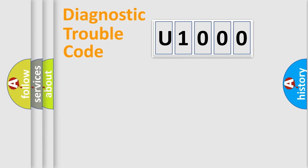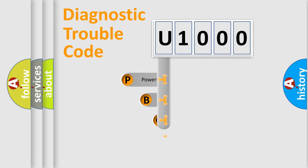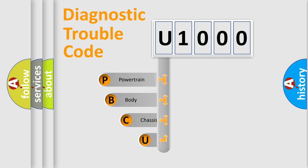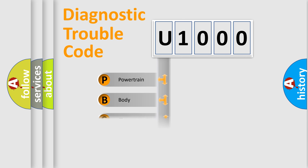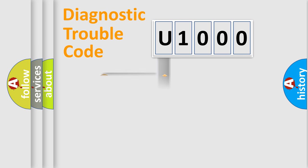Let's look at the history of diagnostic fault code composition according to the OBD2 protocol, which is unified for all automakers since 2000. We divide the electric system of an automobile into four basic units: powertrain, body, chassis, and network.